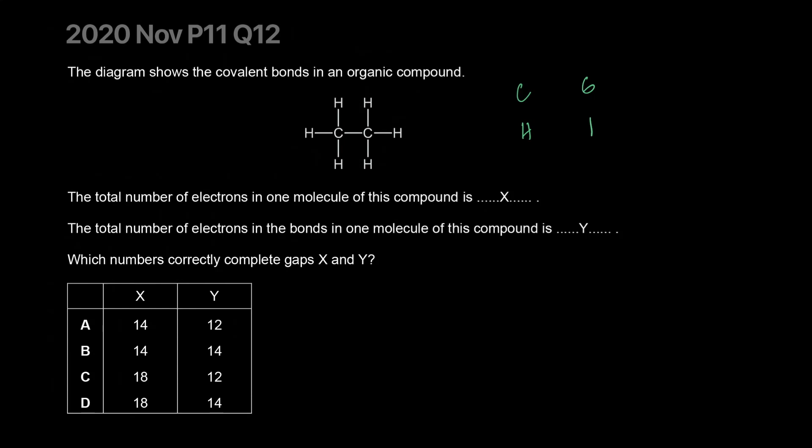You have two carbons and you have one, two, three, four, five, six hydrogens. So that equals to 12 for the carbons and six for the hydrogens. A total of 18 electrons. We were counting protons but the proton number would be the same as electron number.